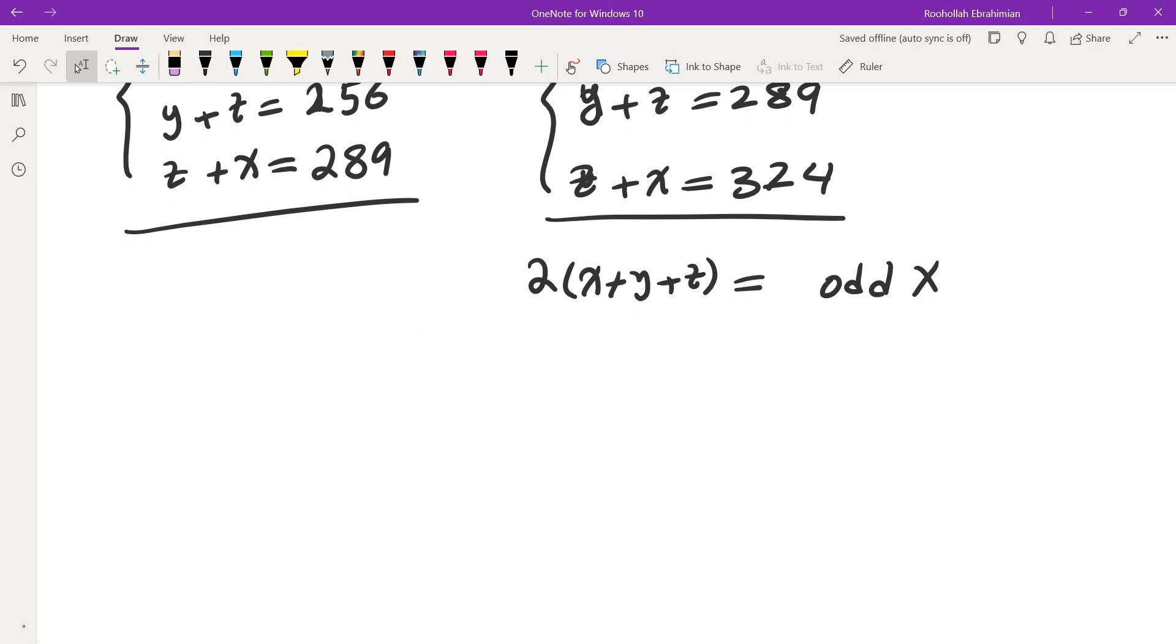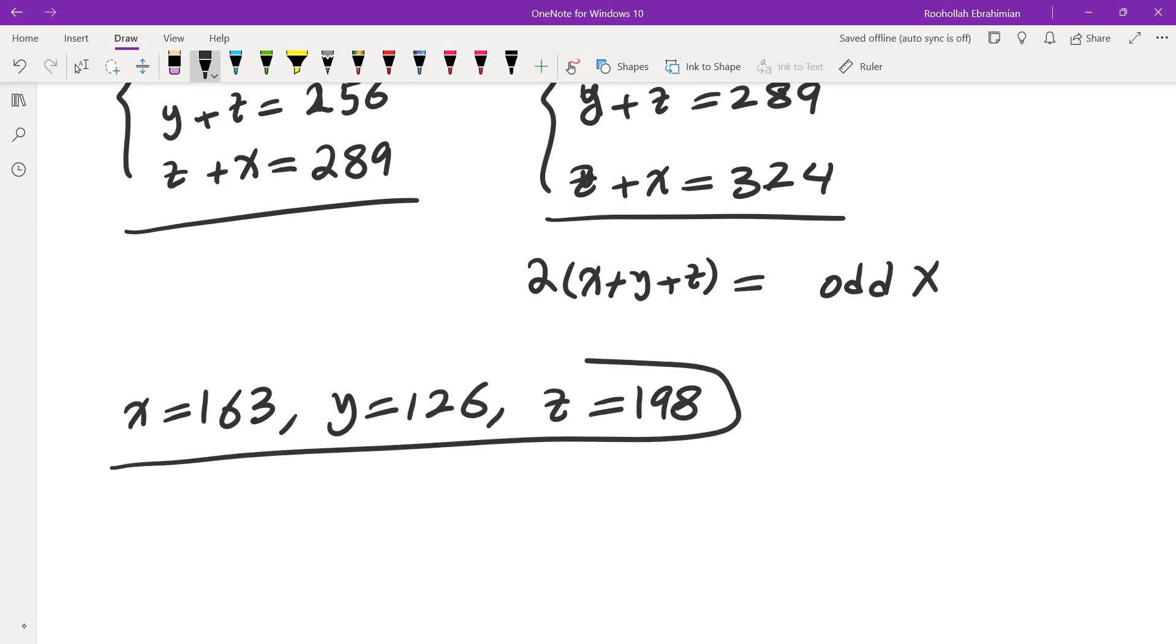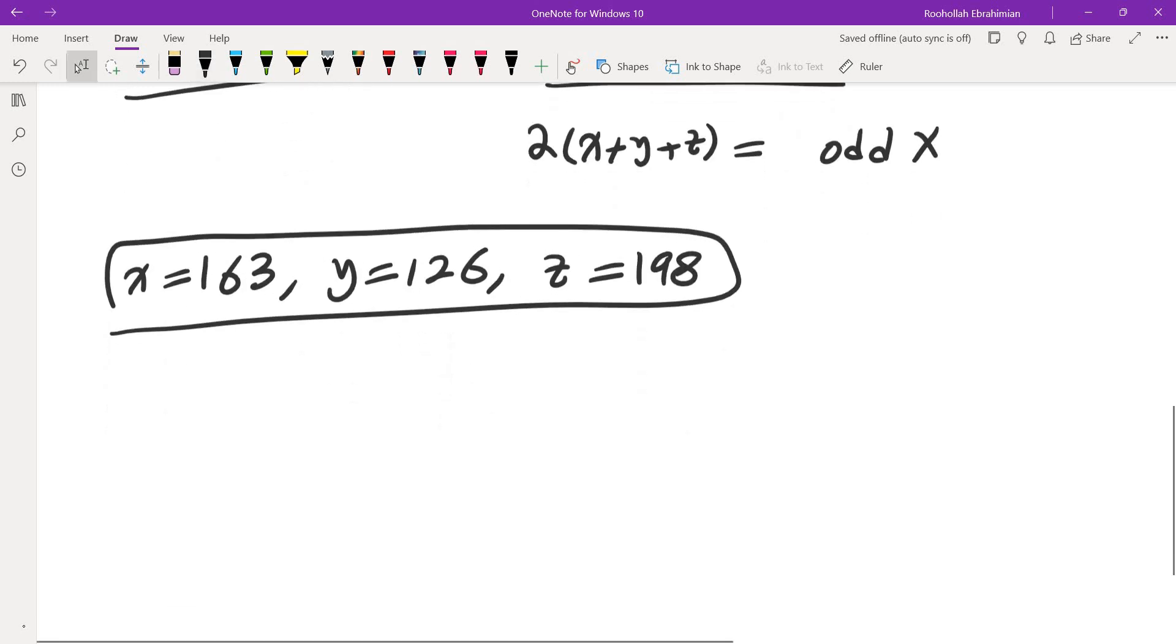So eventually, when I did that, I was able to find x equals 163, y equals 126, and z equals 198. So these three numbers, the sum of each two of them, becomes a perfect square. So then I thought, perhaps I can extend the same idea. So now, I'm going to write down what I came up with.